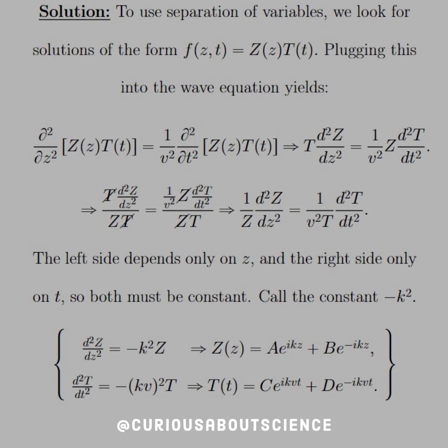If d²Z/dz² = -k²Z, we know this is a second order equation and it'll take the form Z(z) = Ae^(ikz) + Be^(-ikz). Similarly, if we have a new constant (kv)² for the d²T/dt² term, then we get T(t) = Ce^(ikvt) + De^(-ikvt).